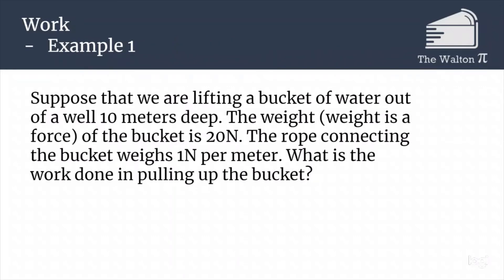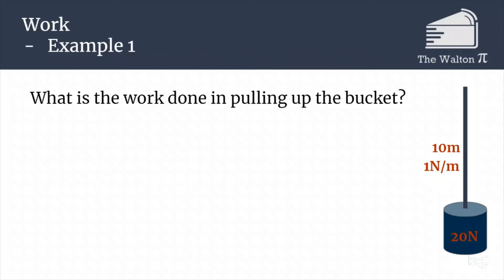Let's suppose that we are trying to lift a bucket of water out of a well that is 10 meters deep. The weight of the bucket is 20 newtons, and the rope connecting the bucket weighs 1 newton per meter. What's going to be the total work done in pulling up the bucket? Here's a little diagram. We have a 20 newton bucket at the bottom connected to 10 meters of rope, which is 1 newton for every meter.